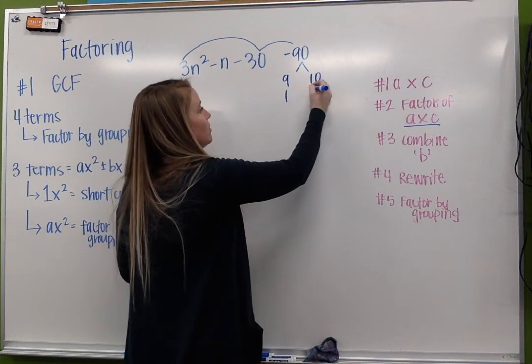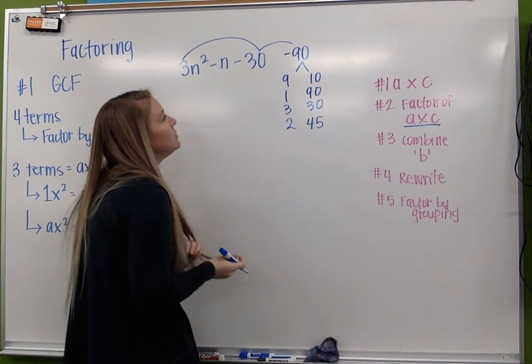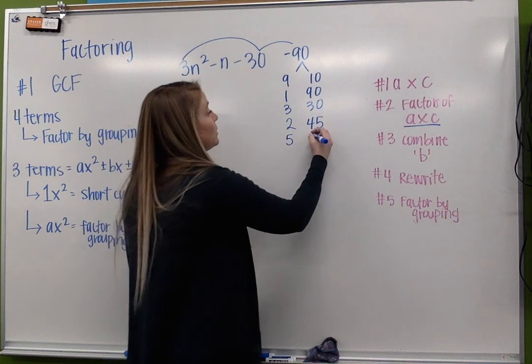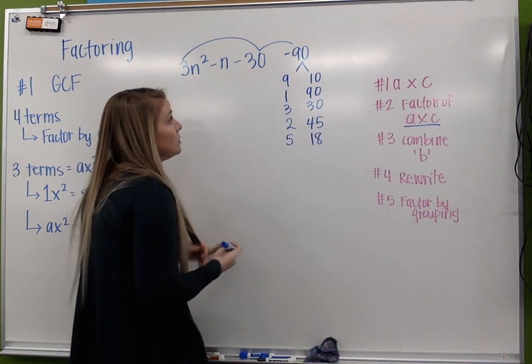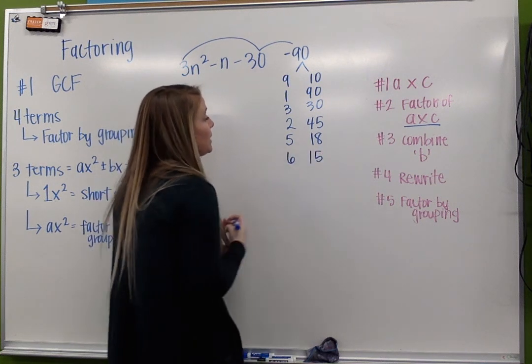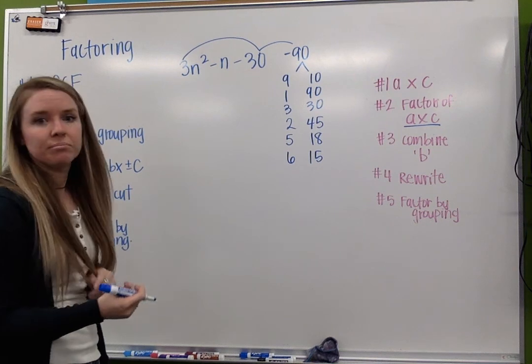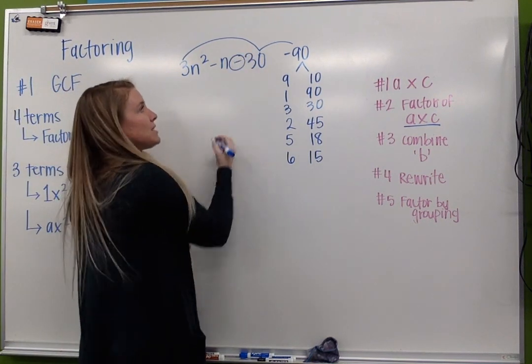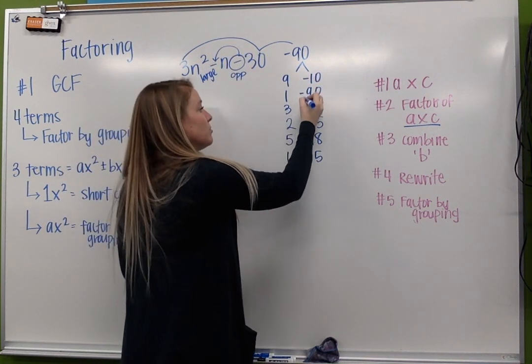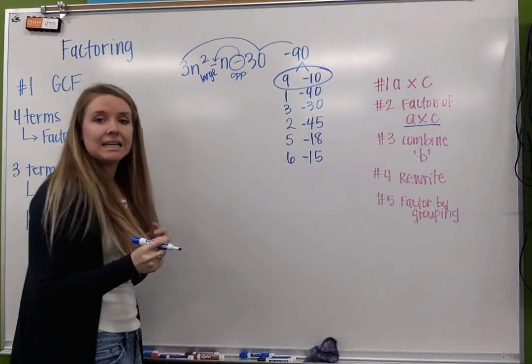So we got 9 and 10, 1 and 90, 3 and 30, 2 and 45. 5 goes in there, 18 times. 6 goes in there, 15 times. I think we're good. Pretty substantial list there. This negative tells me my signs are opposite, and the larger factor is going to be negative. So I'm going to go ahead and make the larger factor negative. And I need a set that equals negative 1, so I'm going to use 9 and negative 10.